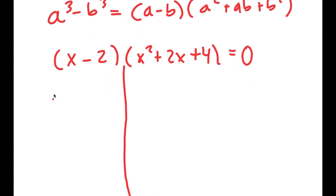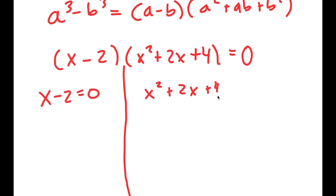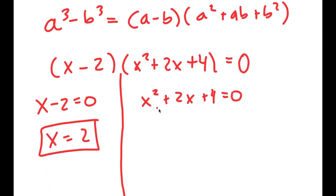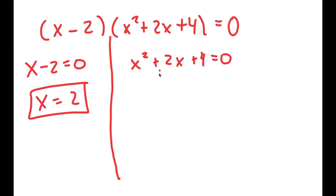So now I get two equations: x minus 2 equals 0, and x squared plus 2x plus 4 equals 0. For x minus 2 equals 0, I get x equals 2, which was the solution we already found. But now we have another equation with two more solutions, because it's a quadratic equation. To solve this, I'm going to use the quadratic formula.